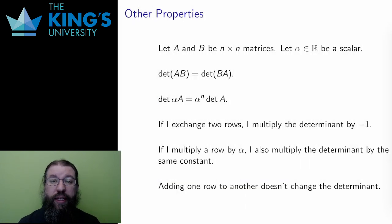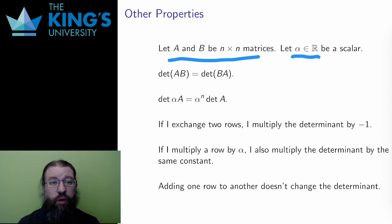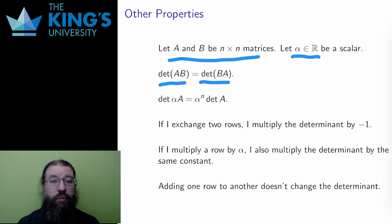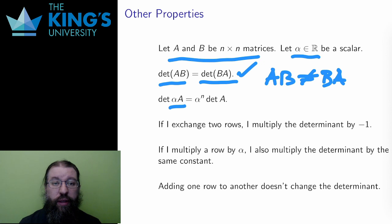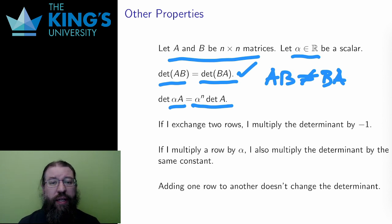Here are some more properties of the determinant. Let A be an n by n matrix and let alpha be a scalar. The determinant of a product is the product of the determinants, as before. Since determinants are just numbers and numbers commute, the determinant of AB equals the determinant of BA — A and B are usually not the same transformation, but they have the same effect on size and orientation. If every single entry in the matrix is multiplied by alpha, the effect on size is multiplying by alpha to the n. In R², multiplying all entries by alpha scales both x and y by alpha, so the change in area is alpha squared, not just alpha — and the same holds for higher dimensions.